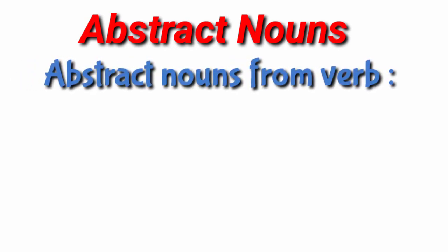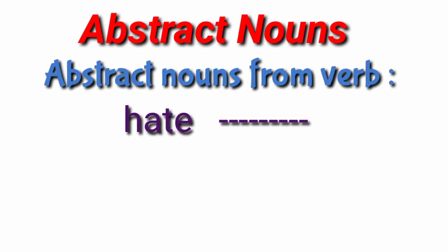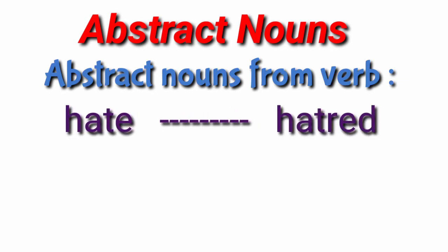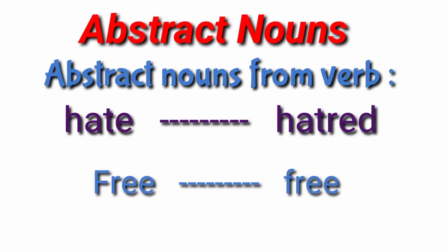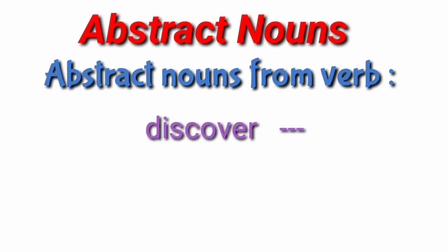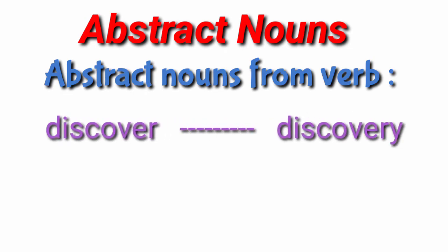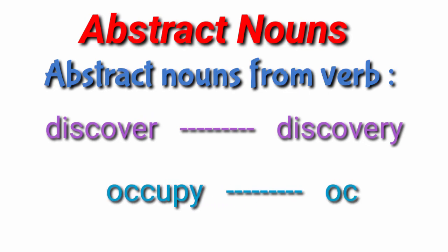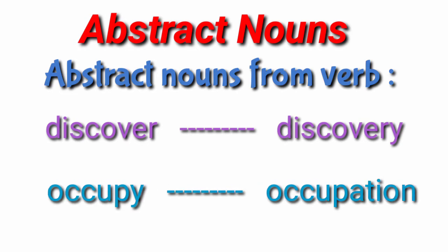Now let us see abstract nouns from verbs. If a verb is given, how do we make an abstract noun from it? Hate — verb — hatred, abstract noun. Free — verb — freedom, abstract noun. Discover — verb — discovery, abstract noun. Occupy — verb — occupation, abstract noun.